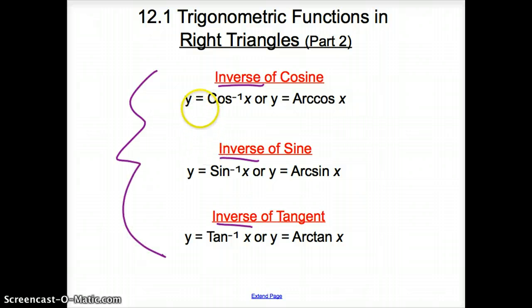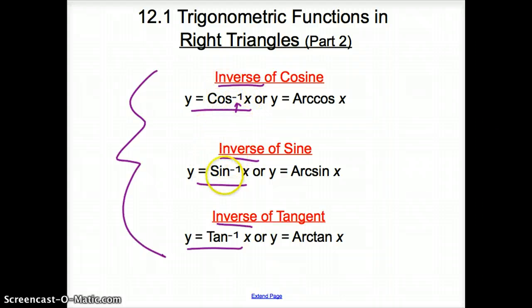Now we represent inverse cosine with that little negative 1 right there, all those trig functions to the negative 1. You can also represent them with arc cosine, arc sine, and arc tangent. It really depends on what book you're using. But for right now, our book is going to use the cosine to the negative 1, sine to the negative 1, and tan to the negative 1.